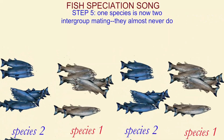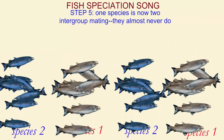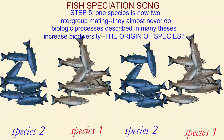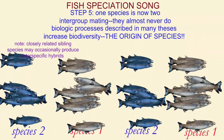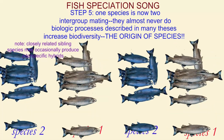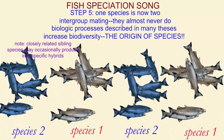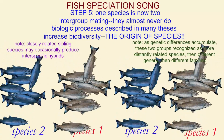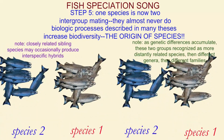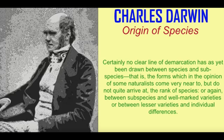Step five: one species is now two; intergroup mating they almost never do. These biological processes, described in many species, lead to increased biodiversity — the origin of species.